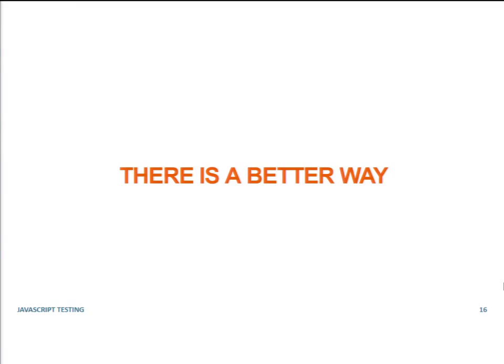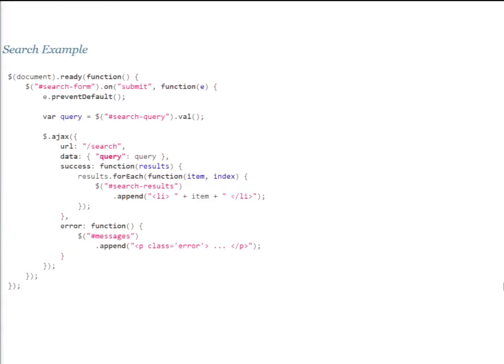We need to talk about writing testable JavaScript code. I'm going to put up a sample of code — a very simple piece using jQuery. What's happening is we've got a little input, and when the user submits the form, instead of a typical form submit, we do an AJAX call for search results, get back those results, and dump them into an unordered list. It's basic functionality you'd probably do 100 times in an application — someone types something in, you do an AJAX call, you get results, you dump them into the page.